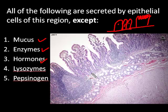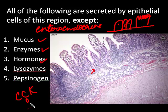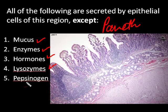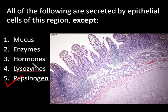Hormones are also secreted. In the crypts of Lieberkühn are special cells known as enteroendocrine cells — entero meaning gut, endocrine meaning endocrine cells — which produce hormones called cholecystokinin and secretin. In the crypts there are also Paneth cells which secrete lysozymes that are antibacterial. So all of those are secreted. However, pepsinogen is not secreted by epithelial cells of the small intestine — pepsinogen is secreted by the chief cells of the stomach. So the answer is pepsinogen.